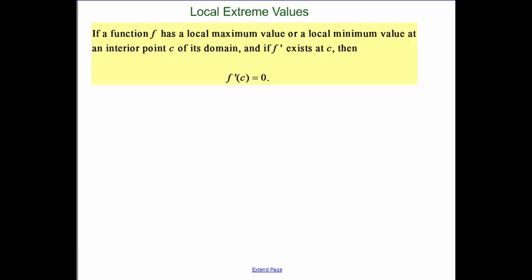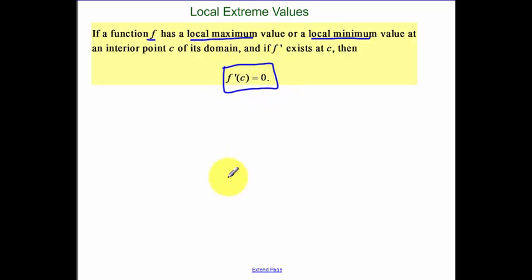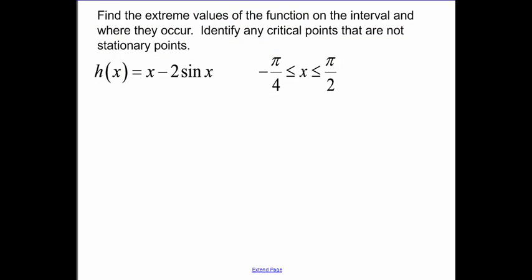Now, we've already talked about this in a lot of videos. A function has a local maximum or a local minimum when your derivative equals zero. So you find your derivative and set it equal to zero. When we're talking about an extreme value, we're going to be plugging in these c values into our original function, along with the endpoints, to determine what our maximum and minimums are. So, speaking of that, let's do an example.